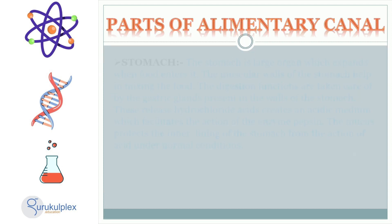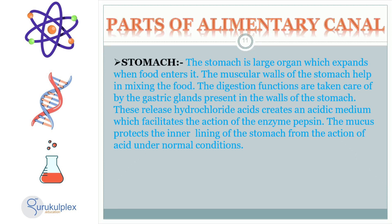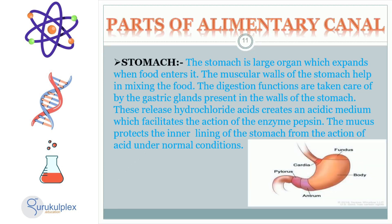The stomach is a large organ with muscular walls which enhances the mixing of food. It has gastric glands which create an acidic environment by secreting hydrochloric acid. This acidic environment aids the enzyme pepsin to break down food into smaller parts that can be further digested in the small intestine. Mucus also provides protection to the inner lining of the stomach from the acidic environment.